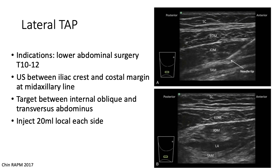The injection of local anesthetic should depress the transversus abdominis muscle. As shown in the lower ultrasound image, after injecting, the local anesthetic forms a dark area between the internal oblique and transversus abdominis, and you can also see the transversus abdominis has been pushed down by the local anesthetic.